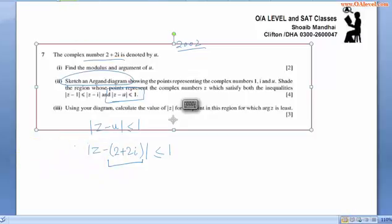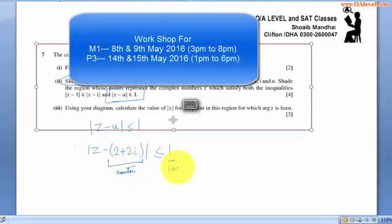The center value of u, this is center and this is radius. The circle would be from center to... this is the real value which is 2 and 2i is this, this is the center and the radius is 1. The circle would be something like this with radius of 1.